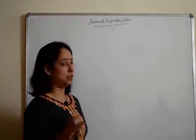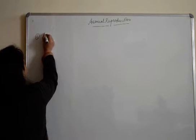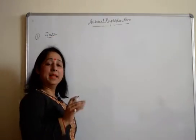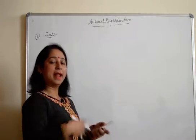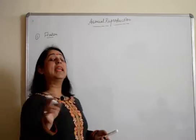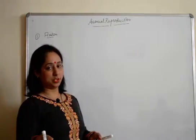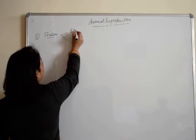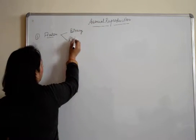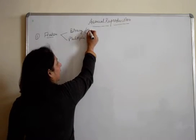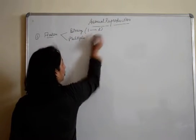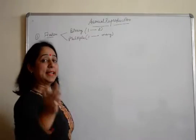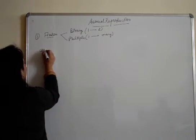We'll start with the first and very common type, which is fission. Fission means one organism divides, and then further division takes place. We categorize it into two types: binary fission and multiple fission. Fission means division - binary fission is when one organism divides to form two, and multiple fission is when one organism forms many new organisms.